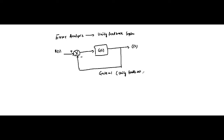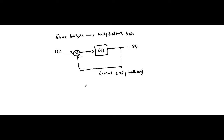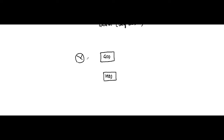But in reality, the feedback path always has some value other than one. Mostly you will come across systems like this — this is the forward path transfer function, and this is the feedback path transfer function which is different from one. This is the summing block; the output C(s) passes through this non-unity feedback path. Here also it is negative feedback.